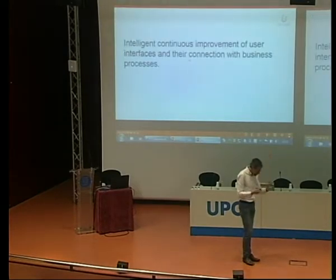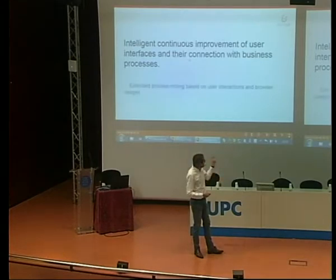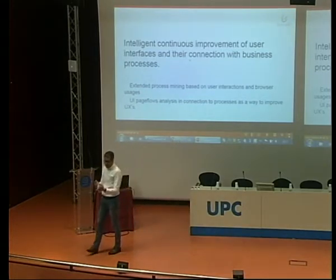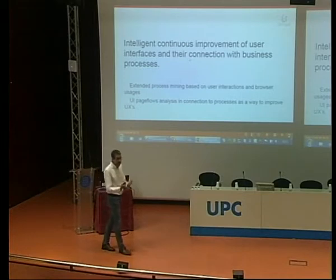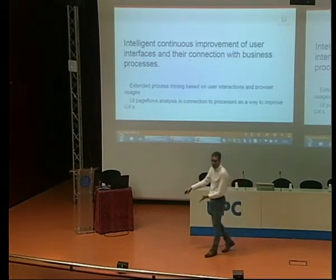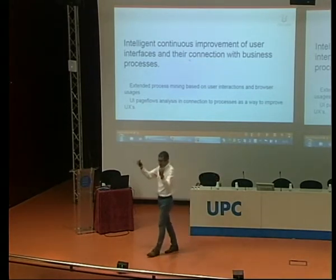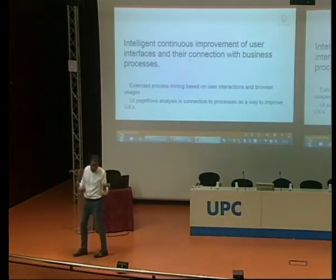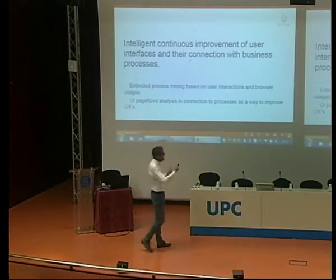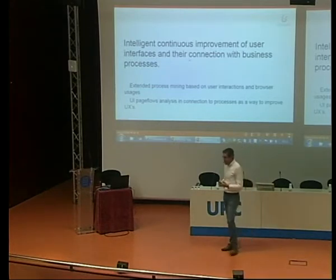This is what I call intelligent continuous improvement of user interfaces in connection with the process, not only the process base. The second thing we are exploring is the concept of page flow. In this example you have one form per process step, but some user interfaces are complex — ten forms at the end, with the last one launching or progressing a process. A page flow looks like a process: you have different steps that are forms connecting depending on what you fulfill. Can we extend the current algorithm to think of a page flow as part of your process? Those are the two things we are currently looking at.